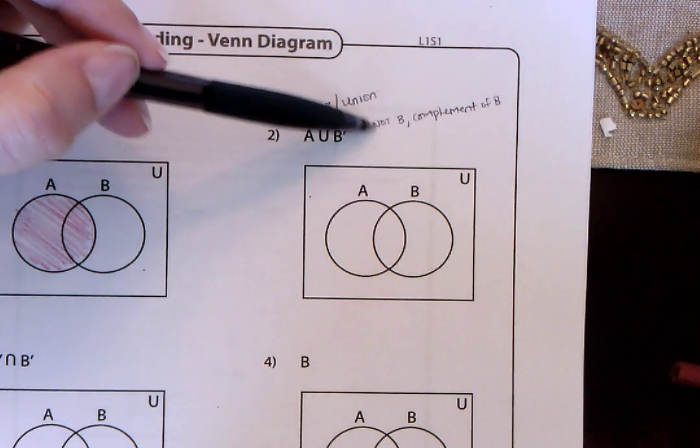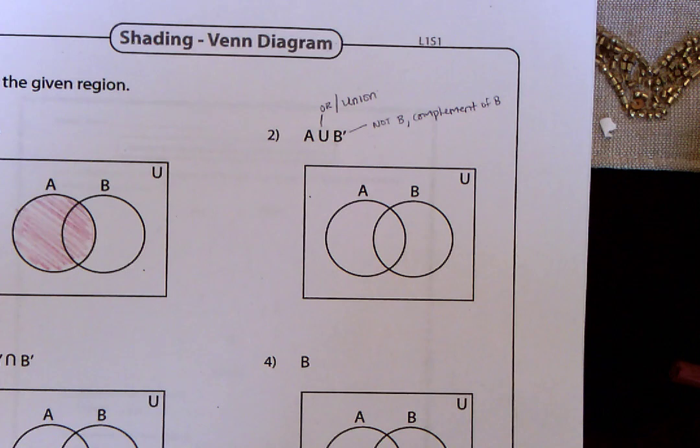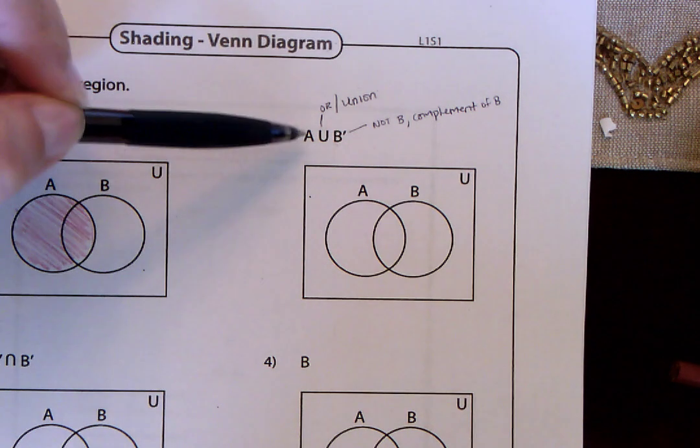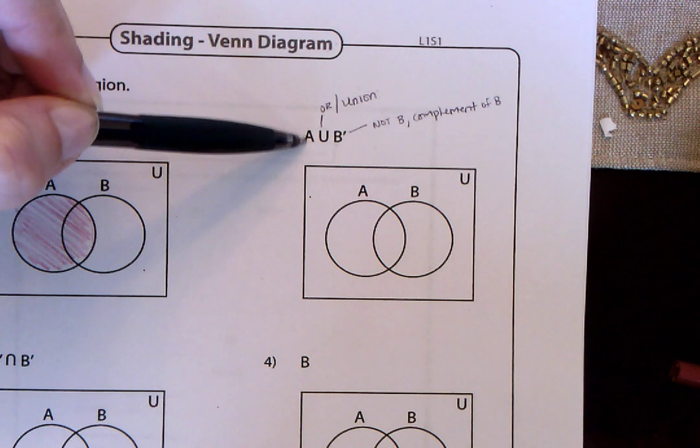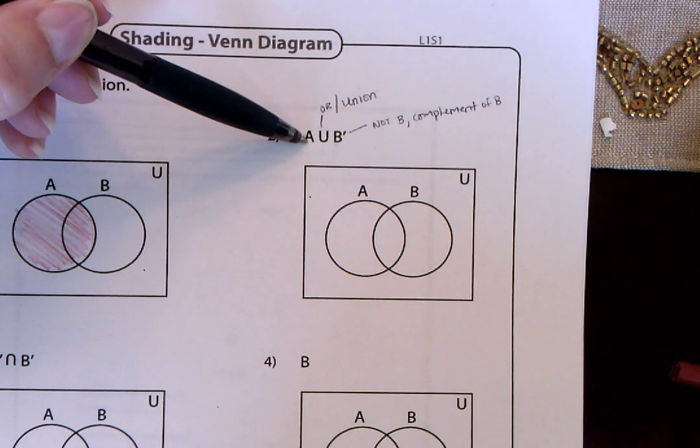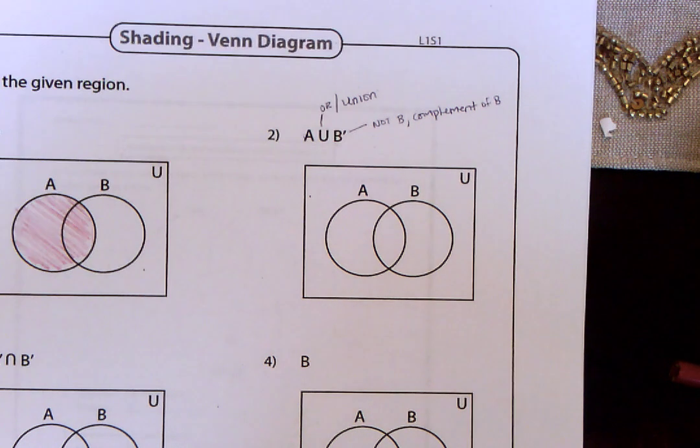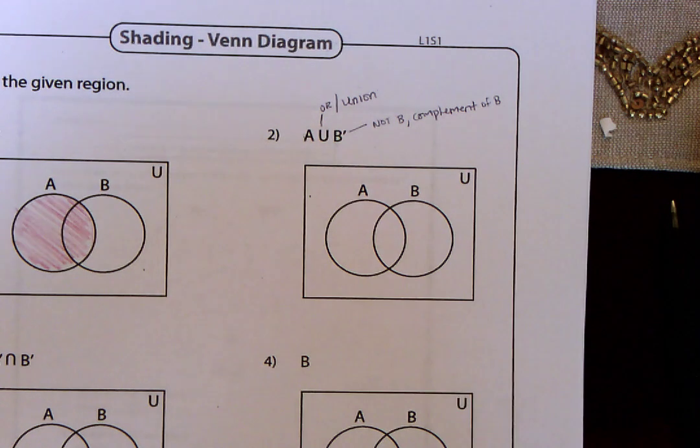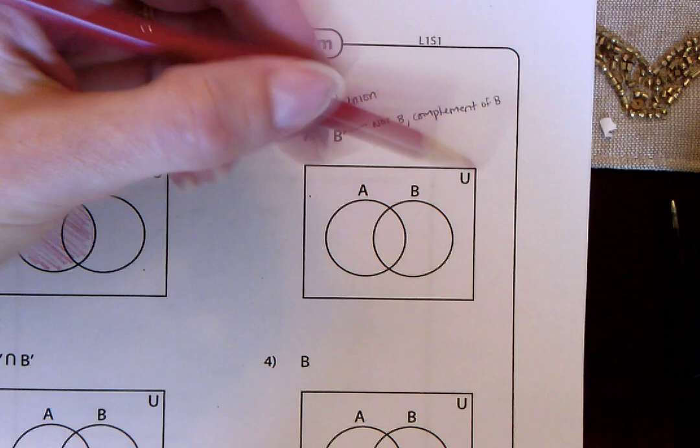So they're saying don't shade in the B. But since it says you can shade in A, it's saying it's either A or not B. So that's what we have to shade. We got to shade A.